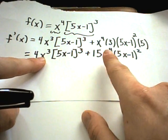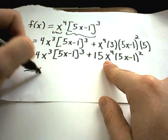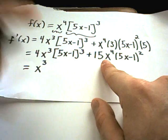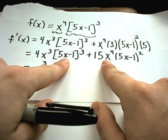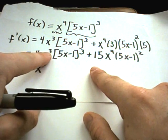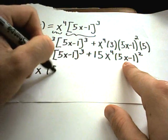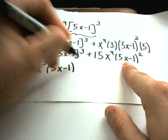Notice I have an x to the third power and an x to the fourth power. Well, I can factor out an x to the third power. Notice also I have a 5x minus 1. I have another 5x minus 1. Just like with the x's, you have to pull out the smaller power. I'll pull out the smaller power. So I can pull out 5x minus 1 squared.